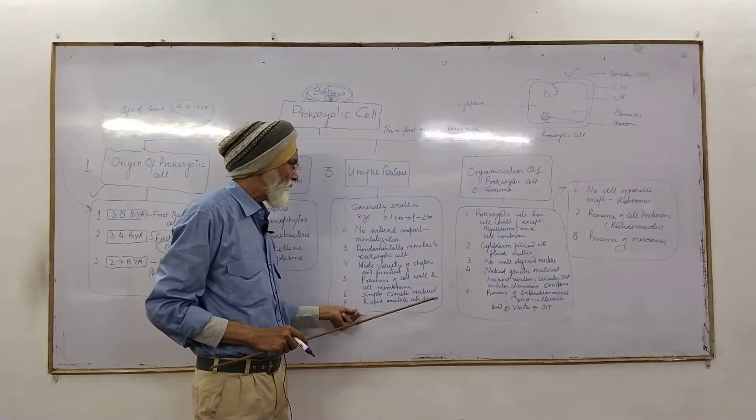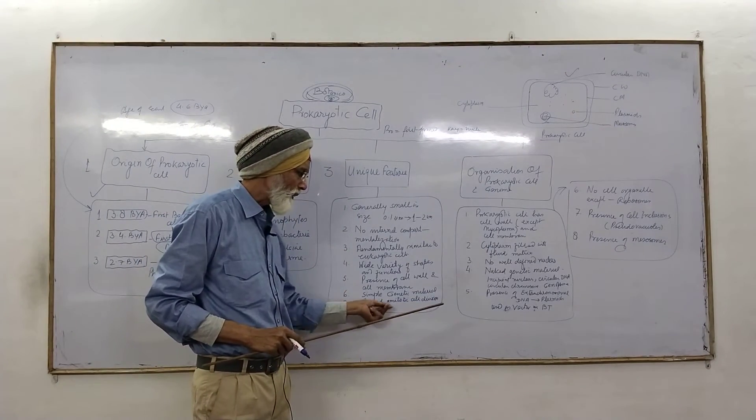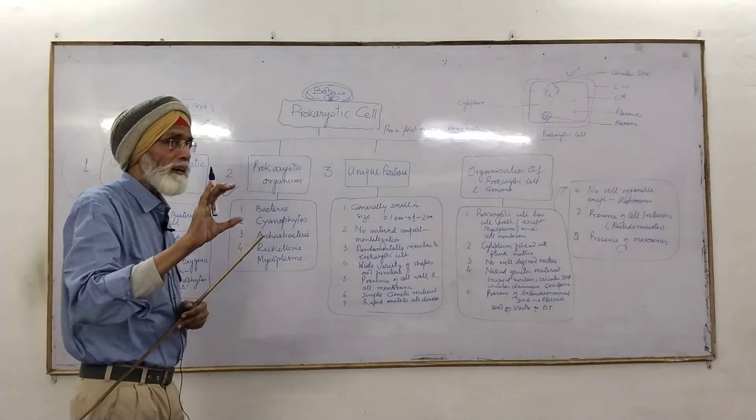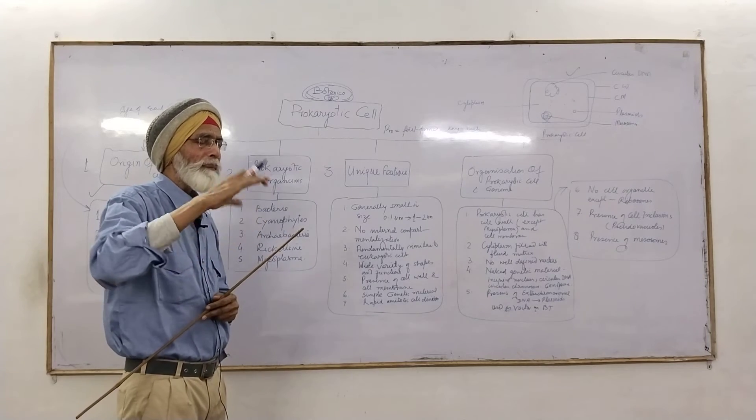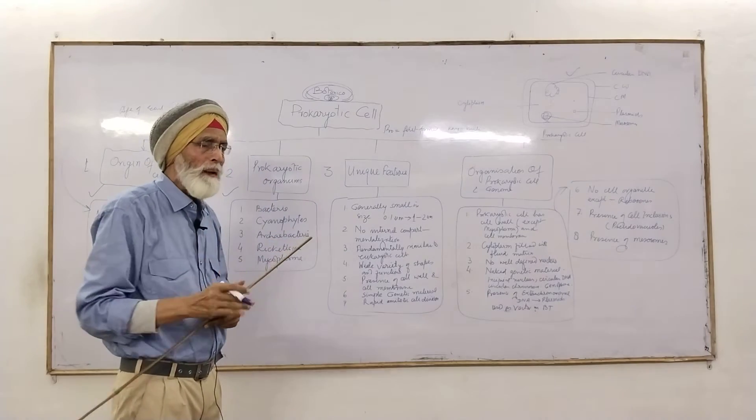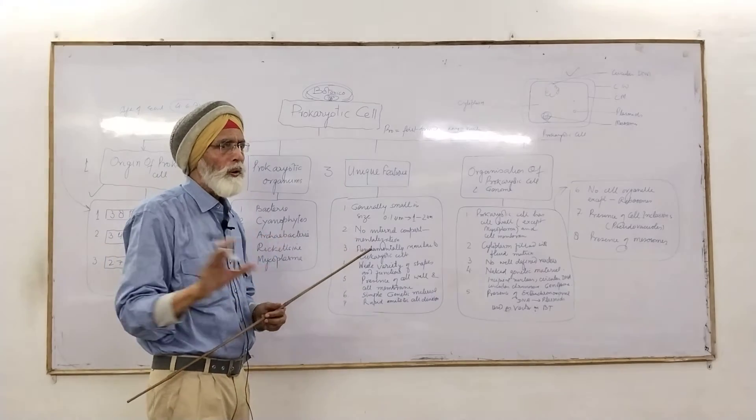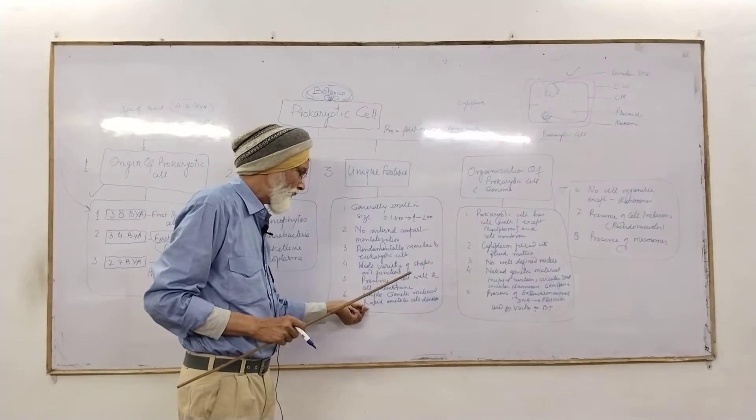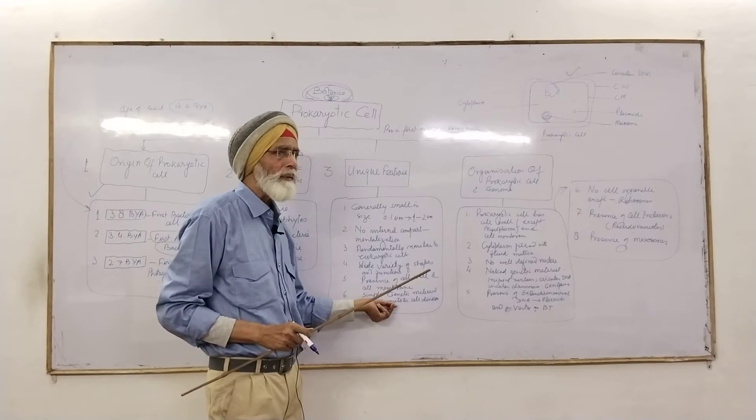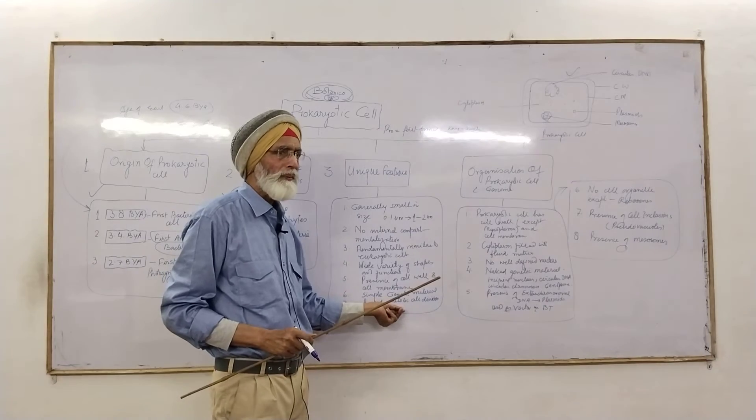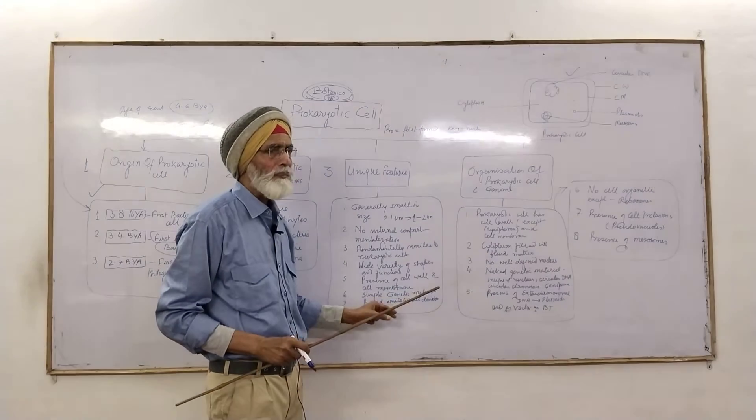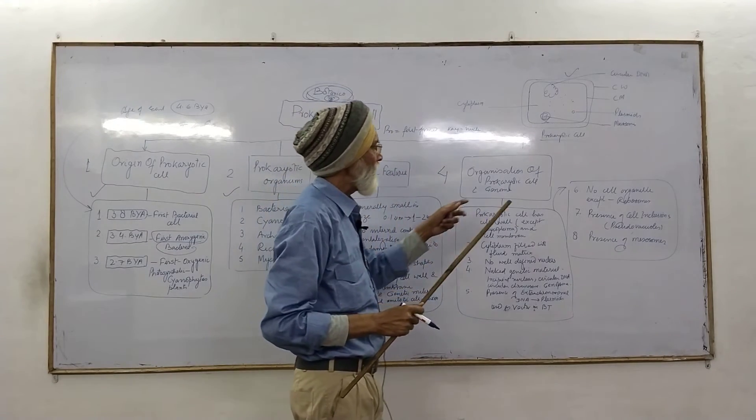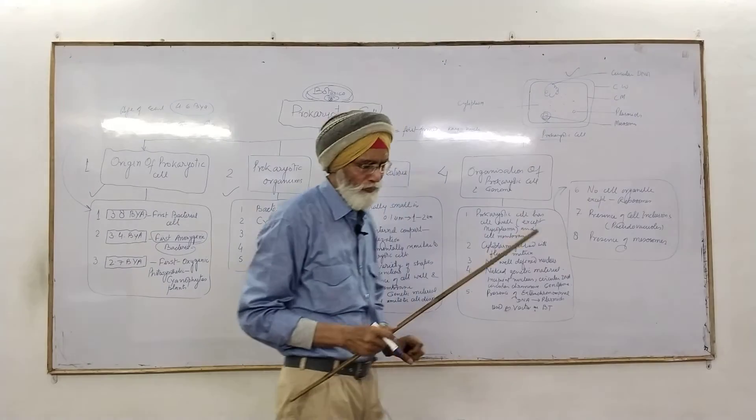Last point, that the rapid amitotic division. As you see, in case of the eukaryote, there is a clear cut spindle apparatus that play a very important role in the cytokinesis. But in case of the prokaryotes, there is no such type of spindle apparatus. That is why they very, very high speedily divide by amitotic division. Every simple type of cell division takes place without cell fluid volume. And the last topic is organization of prokaryotic cell and the genome.